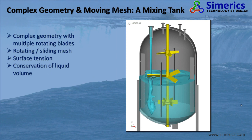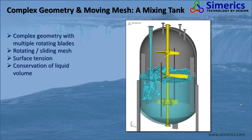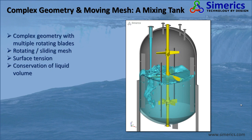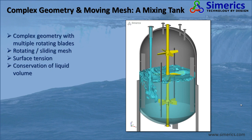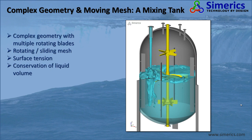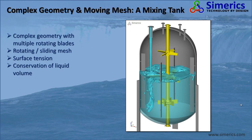This is a simulation of a mixing tank. It shows that complex geometry with multiple rotating blades was modeled using rotating and sliding meshes. It includes surface tension and the liquid mass is conserved.